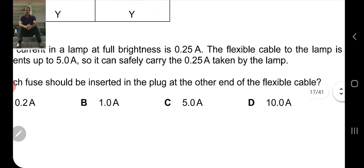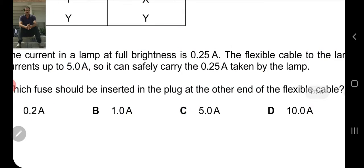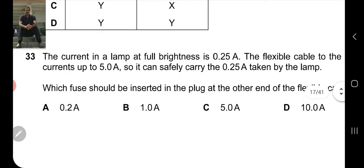The brightness occurs at 0.25 ampere. So you won't use the 0.2 ampere fuse given in option A, because it needs 0.25 ampere to turn on. If you put a 0.2 ampere fuse, it won't turn on at all.